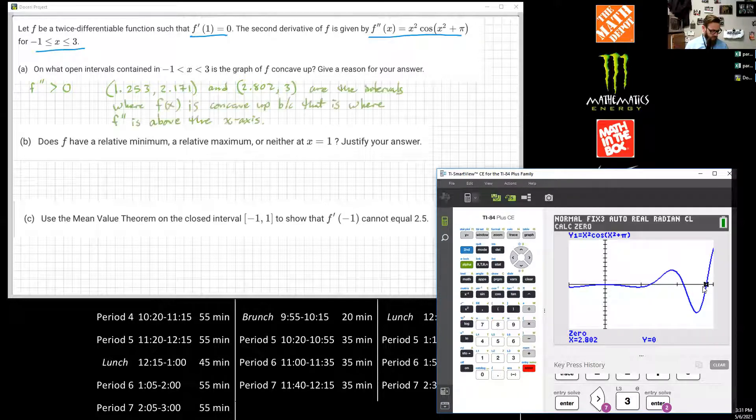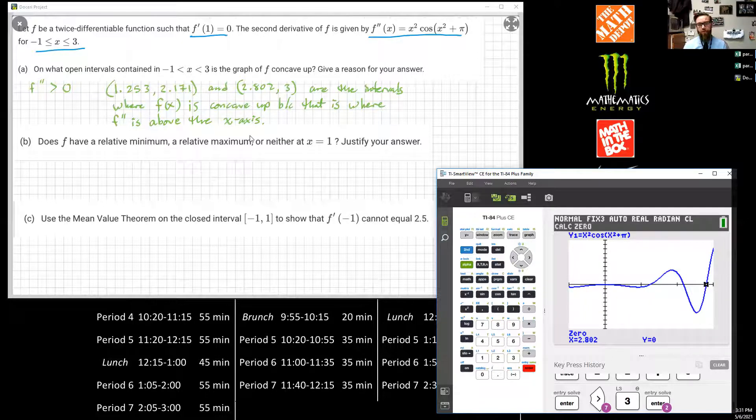And then it says, give reason for your answer. So I'm just going to state it. These are the intervals where F(x) is concave up because that is where F'' is above the x-axis. Or you can just say where F'' is positive. Alright. So that one's done.